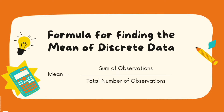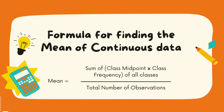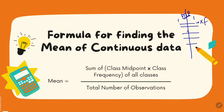For discrete data — data which is not continuous — we can simply take the sum of observations and divide by the total number. But if it is continuous data, before taking the sum of observations, you must understand that the sum of observations equals the frequency of occurrence of each class multiplied by its midpoint. Continuous data has different classes, each with a lower limit and an upper limit. So we take the midpoint, multiply it by the frequency of that class, do that for all classes, sum up those products, and divide by the total number of observations.